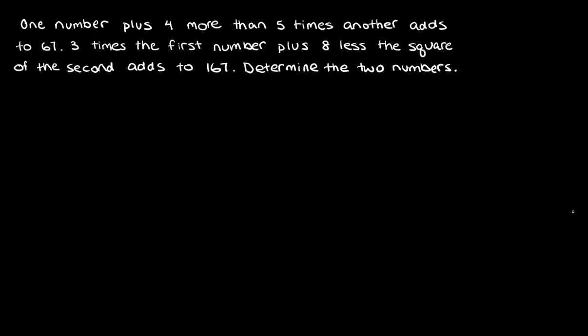The first problem — the main issue with this one is: can you make this question into a set of equations? One number plus four more than five times another adds to 67. Three times the first number plus eight less the square of the second adds to 167.